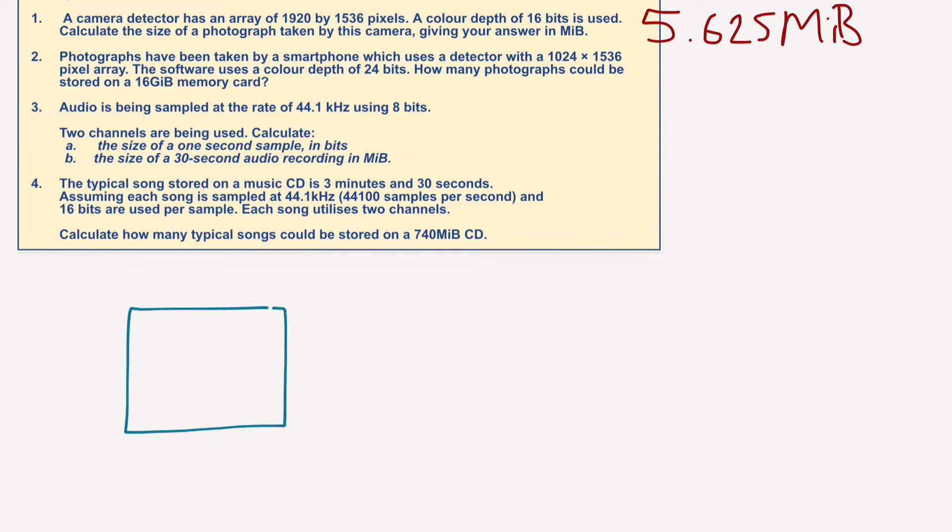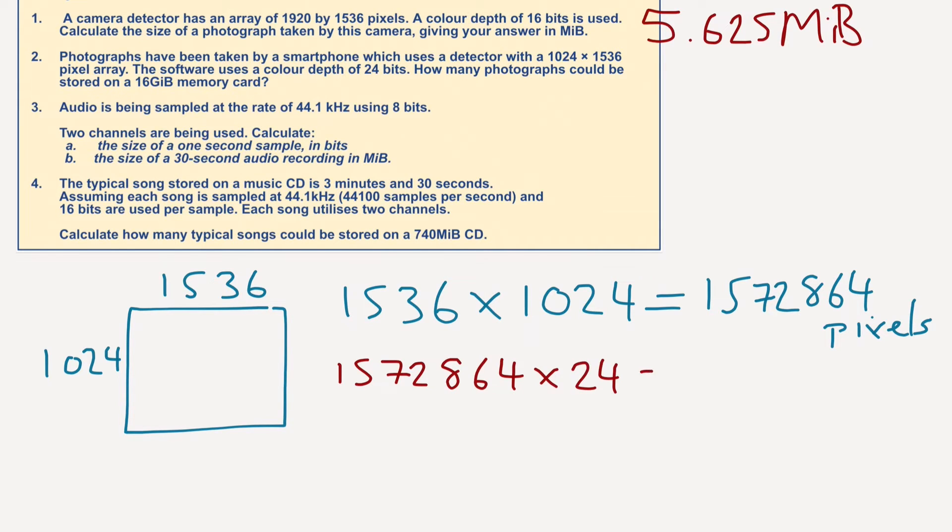The second one, let's draw this out. This time it is 1536 multiplied by 1024. And of course, we need to multiply that by 24. So 1,536 times 1024 equals 1,572,864 pixels. We need to multiply that by 24, which gives us 37,748,736 bits.